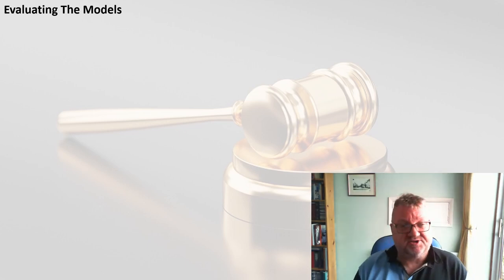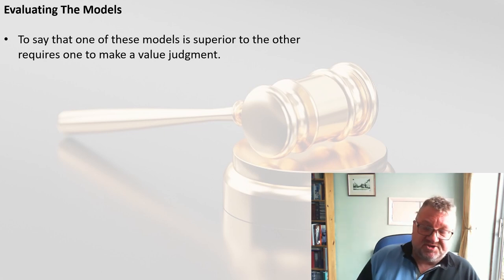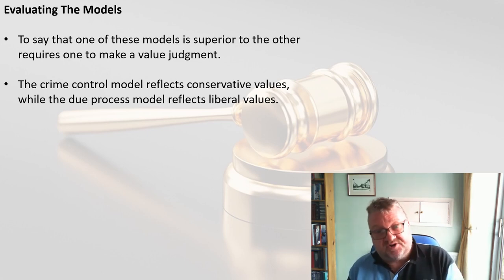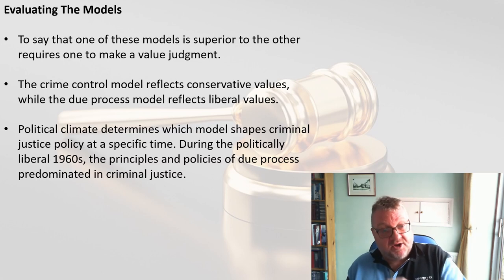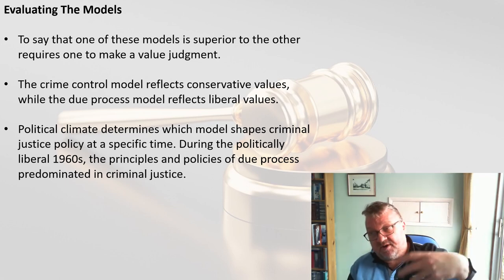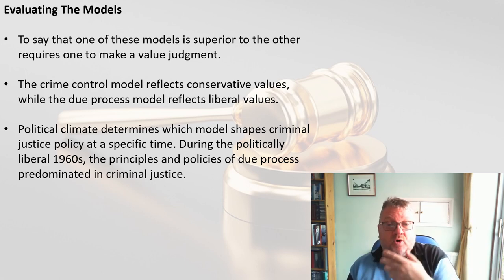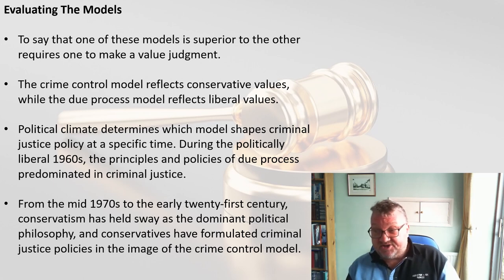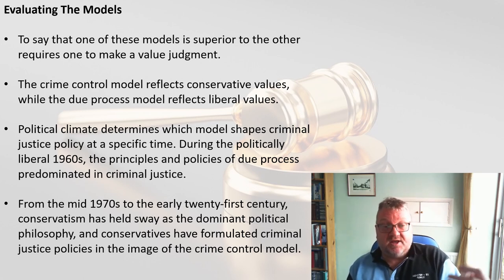When evaluating these models, it's an inexact science because saying one is better than the other is a value judgment based on personal beliefs. The crime control model reflects conservative values — it's more right-wing — while the due process model reflects more liberal values and is more left-wing. Political climate very much determines and shapes criminal justice policy at any specific time. In the 1960s, which were more politically liberal, due process policies predominated. But from the mid-1970s to the present, conservatism has generally held sway as the dominant political philosophy.